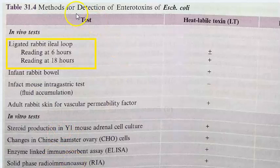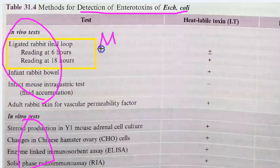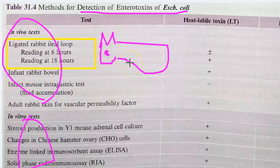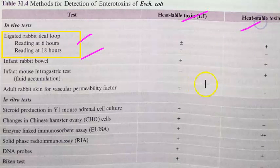There are methods for detection of enterotoxin of E. coli. In vivo tests include the ligated rabbit ileal loop test, read after 6 hours and 18 hours. In vitro tests are also available. These help identify heat-labile and heat-stable toxins.